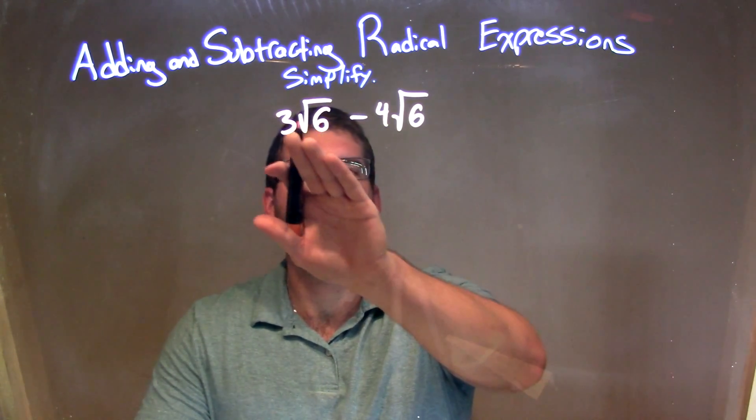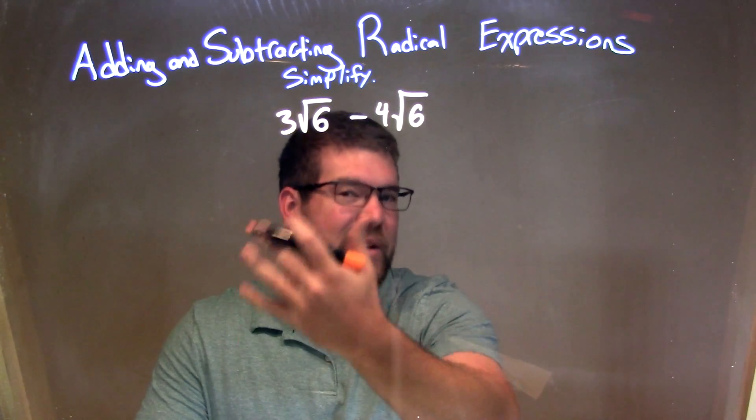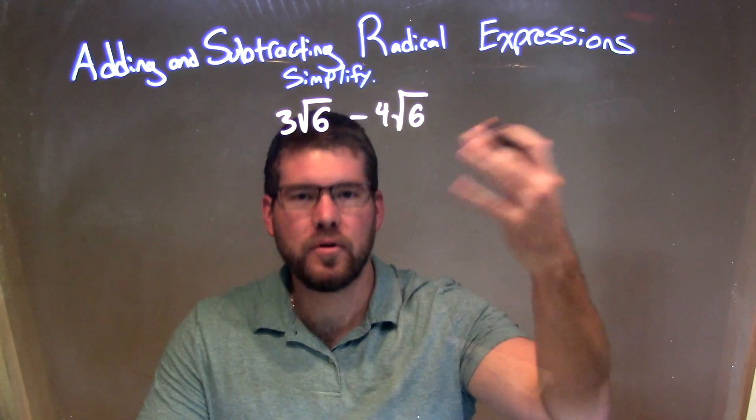Well, since they're both, so it's 3 times the square root of 6, or 3 square root of 6 minus 4 square root of 6s,